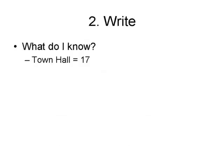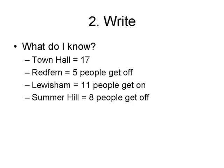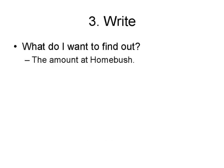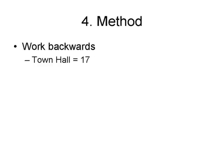It's very good to write down what we know. By writing down what we know, we're clarifying and interpreting the problem, and also thinking through the solution. So always write it down. At Town Hall, 17 people arrive. At Redfern, five people get off the bus. At Lewisham, eleven people get on. At Summer Hill, eight people get off. At Ashfield, ten people get on. At Berwyn, seven people get off. At Strathfield, three people get on. What do I want to find out? I want to find out the amount at Homebush, because I don't know it. So we work backwards.